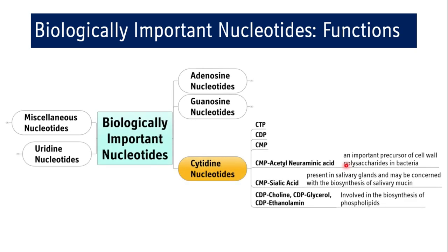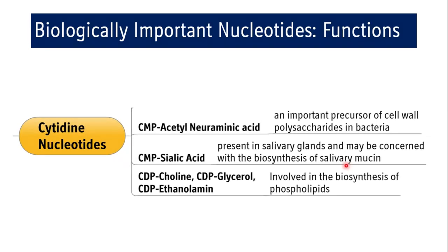Coming to cytidine nucleotides: CMP-acetylneuraminic acid is an important precursor of cell wall polysaccharides in bacteria. CMP-sialic acid is present in salivary glands and may be concerned with the biosynthesis of salivary mucin. CTP-choline, CTP-glycerol, and CTP-ethanolamine are involved in the biosynthesis of phospholipids. MCQs may be asked on these biologically important nucleotides which have specific roles.